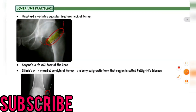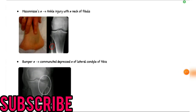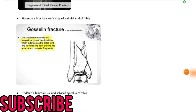Next are the lower limb fractures. Unsolved fracture: intracapsular fracture of the neck of the femur. Segond's fracture: ACL tear of the knee. Stieda's fracture: fracture of the medial condyle of the femur; a bony outgrowth from that region is called Pellegrini's disease. Next is the Maisonneuve's fracture: ankle injury with fracture of the neck of the fibula. Bumper's fracture: comminuted depressed fracture of the lateral condyle of the tibia — diagnosis of tibial plateau fracture.